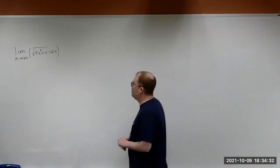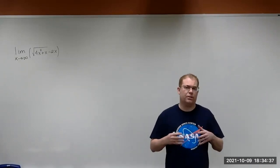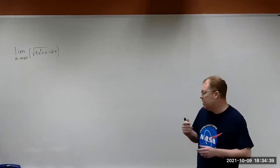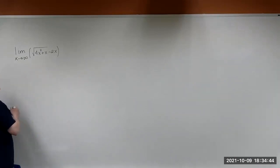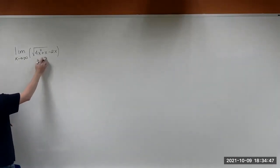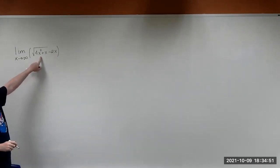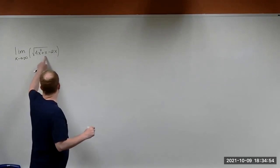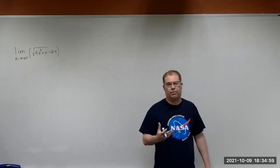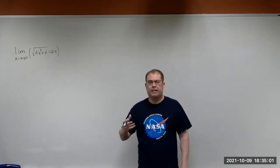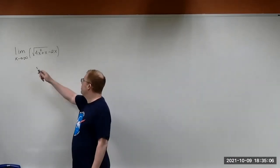The first thing you should always do when you come across a limit is try direct substitution. When you plug in infinity into each x, for this part you're going to get infinity, because everything underneath this radical sign is basically an increasing function. x squared is increasing, and so is x, so everything underneath this square root is going to be increasing.